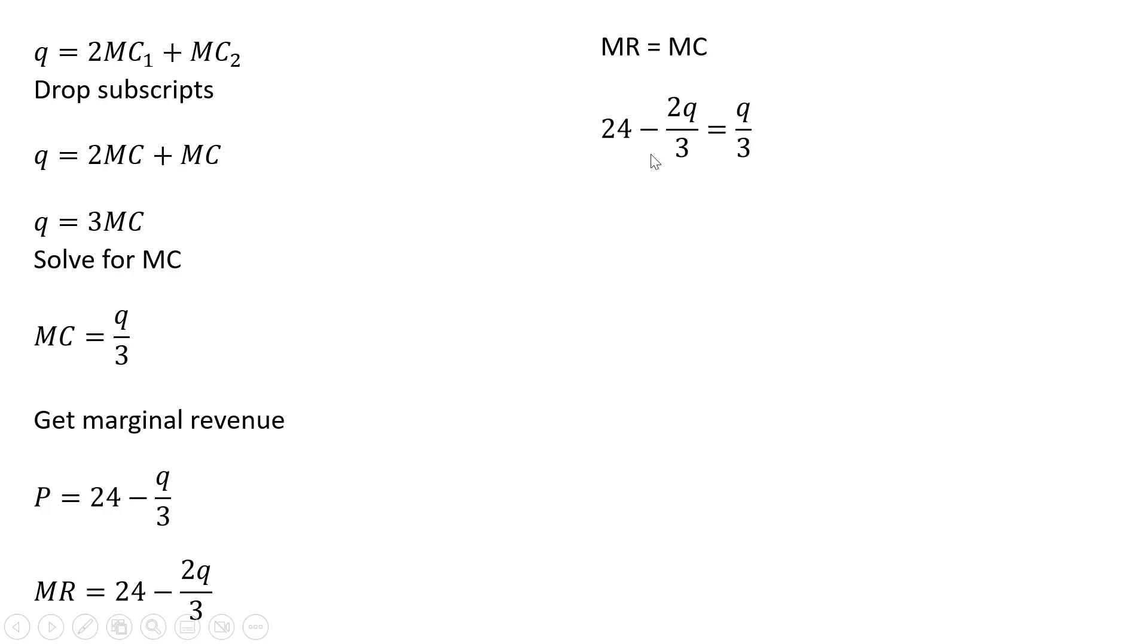Now we set marginal revenue equal to marginal cost. Adding the two-thirds Q to both sides, the right-hand side is just Q, so the firm will produce a total of 24 units. And at 24 units, if we evaluate marginal revenue, plugging 24 in for Q, the marginal revenue at 24 units is 8.